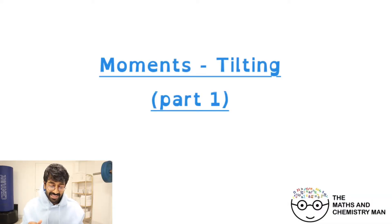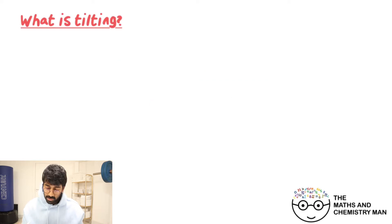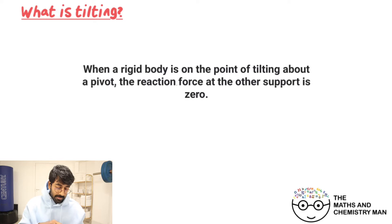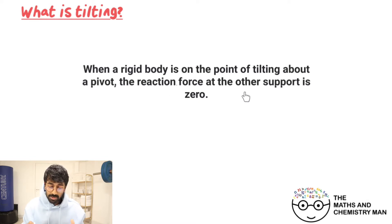We're back again on the last part of the moments chapter and this one's all about tilting. So what is tilting? Here's a definition you should remember: when a rigid body is on the point of tilting about a pivot, the reaction force at the other support is zero.